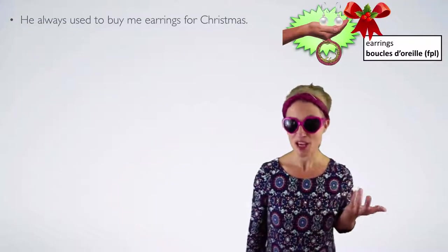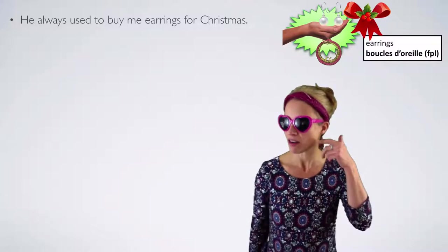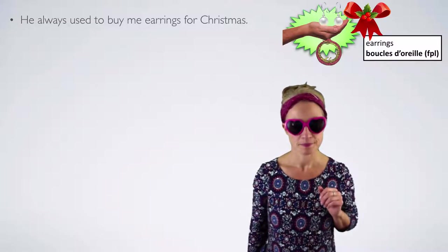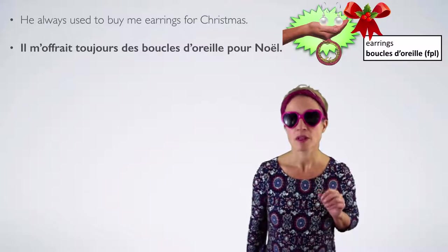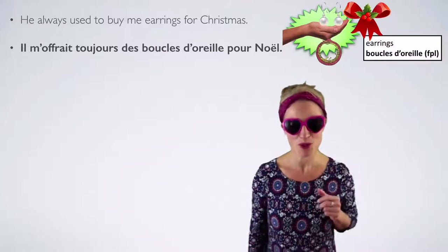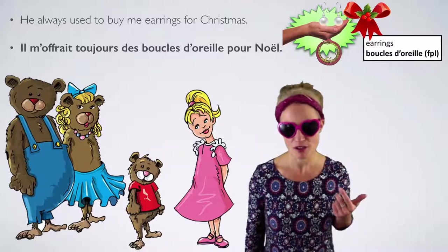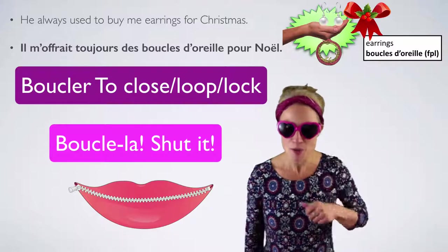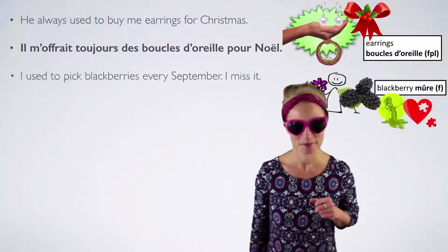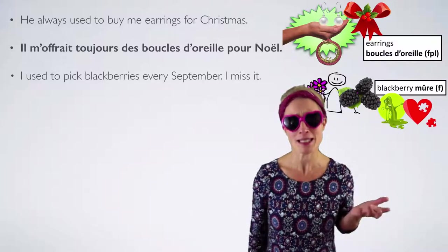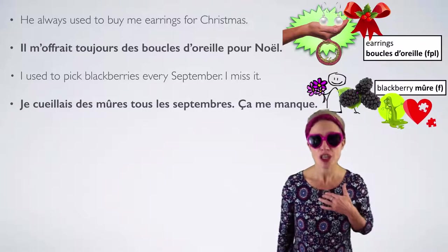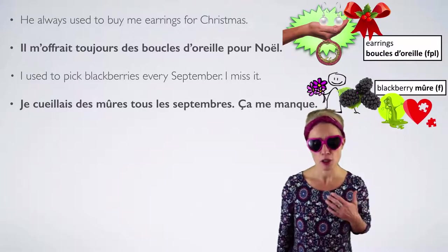'He always used to buy me earrings for Christmas.' Earrings are 'boucle d'oreille' — boucle means a circular, loop-like thing. Feminine plural. Il m'offrait toujours des boucles d'oreille pour Noël. We've got Goldilocks — boucle d'or. Boucler can be used impolitely to say 'boucle-la' — not very nice. 'I used to pick blackberries every September — I miss it.' Blackberry is 'une mûre.' Je cueillais des mûres tous les septembre. À chaque septembre. Ça me manque.